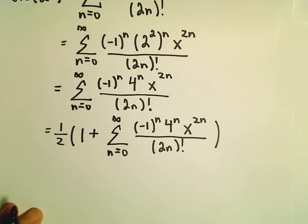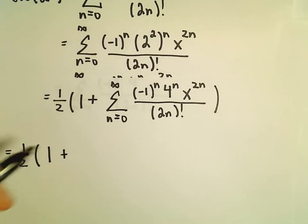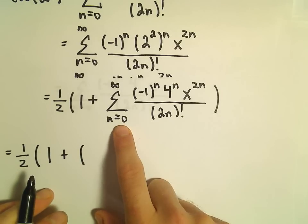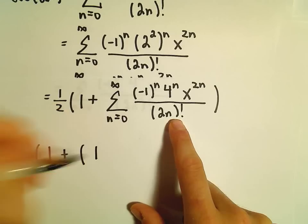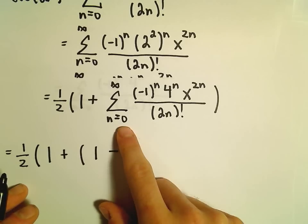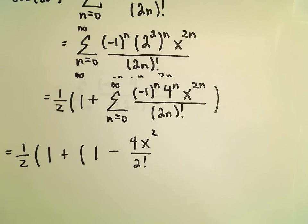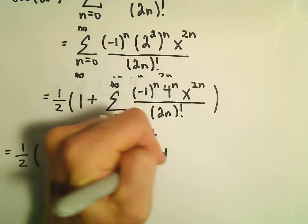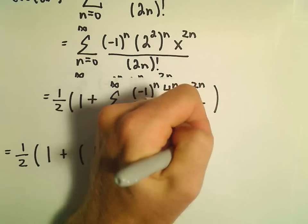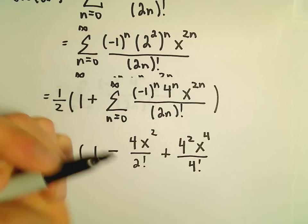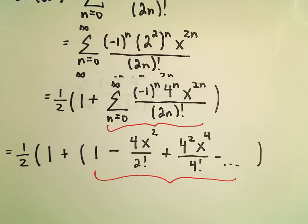Let's expand out a couple of terms to see what happens. We have one half times 1 plus: plugging in n equals 0 gives negative 1 to the 0 times 4 to the 0 times x to the 0 over 0 factorial, which is positive 1. Plugging in n equals 1 gives negative 4x squared over 2 factorial. Plugging in n equals 2 gives positive 4 squared times x to the 4th over 4 factorial, and so on.